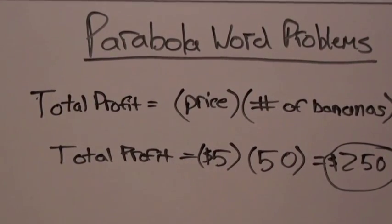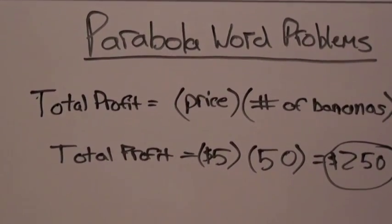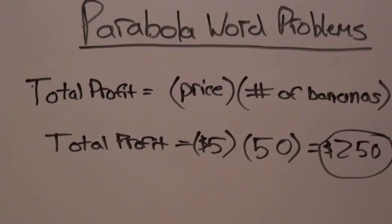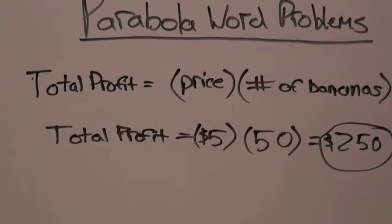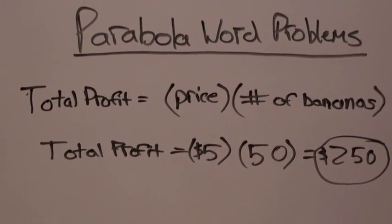In Ethan's case, Ethan sells his bananas for $5 a piece and he sells 50 bananas a day, totaling out to equal $250 a day.